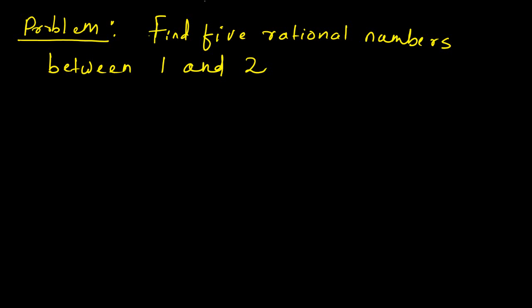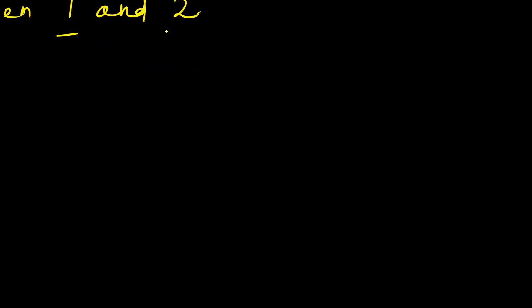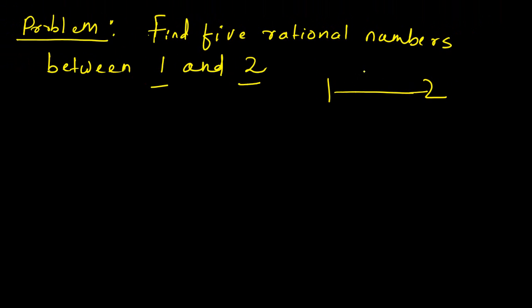Here is a problem on the number system. The problem is: find 5 rational numbers between 1 and 2. So, between 1 and 2, we need to find 5 rational numbers. How do we find that?